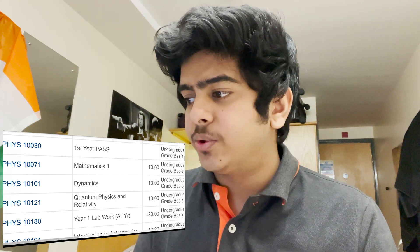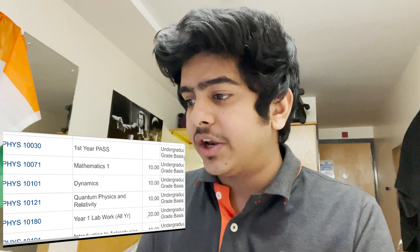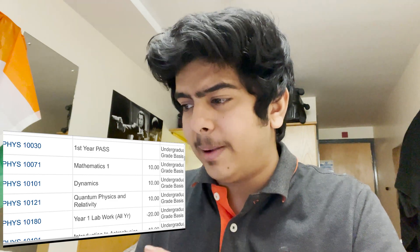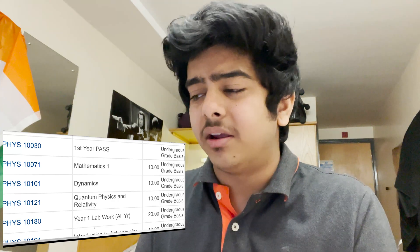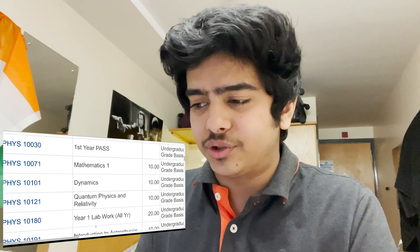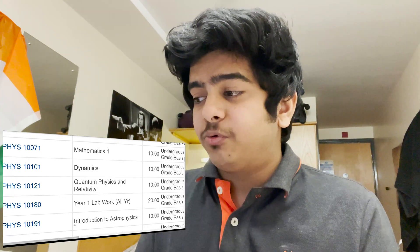Year one lab work is also part of our course, but we haven't been graded on it yet because it's a year-long course. As you can see, all the other modules have 10 credit units, but lab work has 20, covering both semester one and semester two. We'll get those grades directly at the end of the year. The lab work itself is pretty challenging, but the marking isn't that harsh and most of us tend to get good grades in labs, so it shouldn't be a problem.